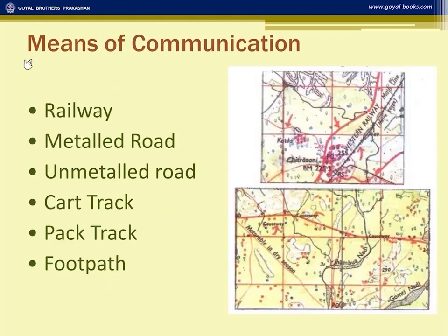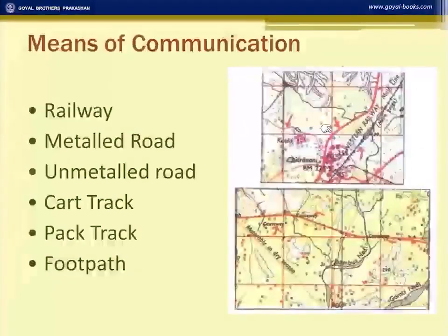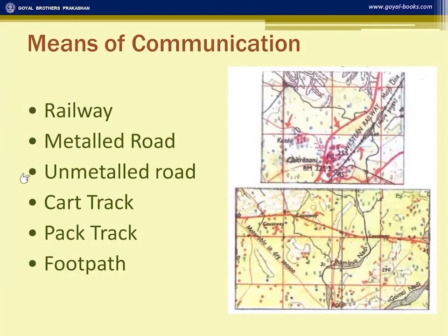Means of communication shown on the survey sheet include a railway line — such as the Western Railway shown at the corner of the map — indicating people can travel by train. A metal road joining different places shows the area is progressive and well connected, promoting trade. An unmetalled (kaccha) road means people are travelling on an unpaved road.